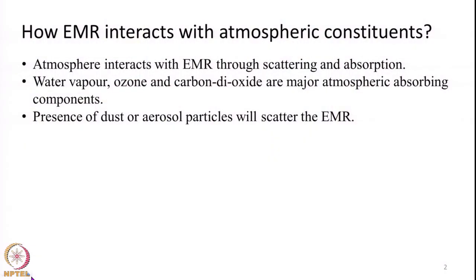The atmosphere interacts with electromagnetic radiation through scattering and absorption. Scattering occurs because of the presence of tiny gas molecules or aerosol particles. Aerosols include dust carried by wind, or particles from burning stubble. When aerosols, gas molecules, raindrops, or ice particles are present in the atmosphere, they cause scattering.